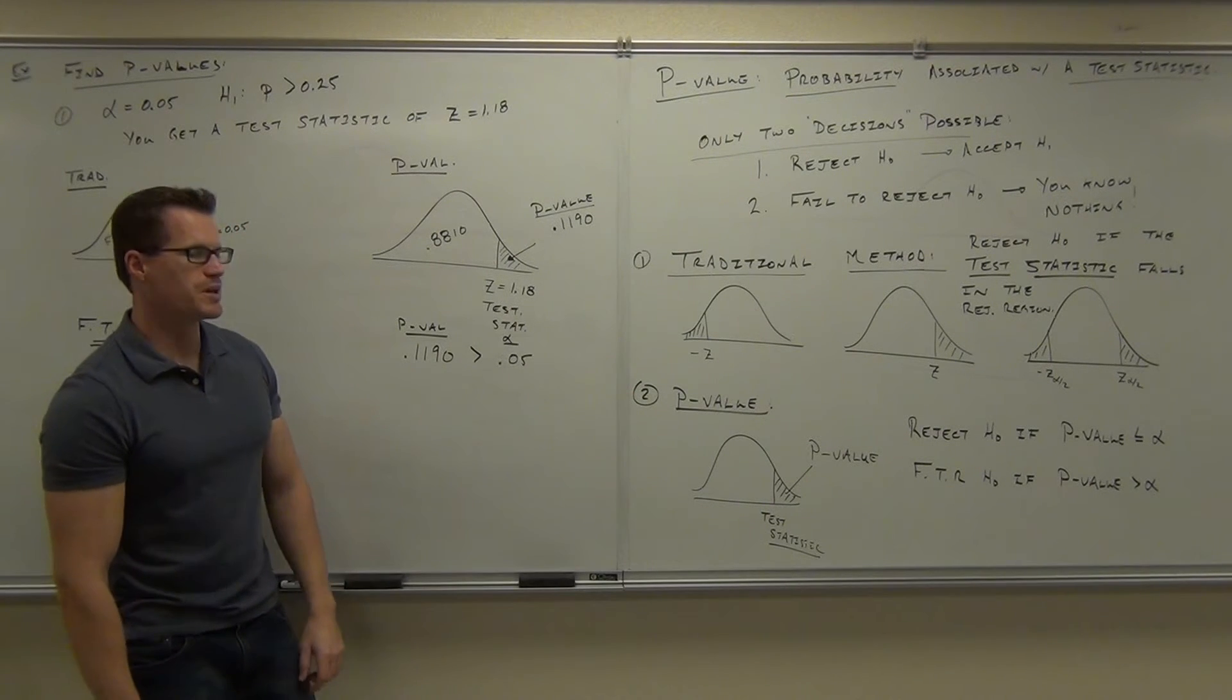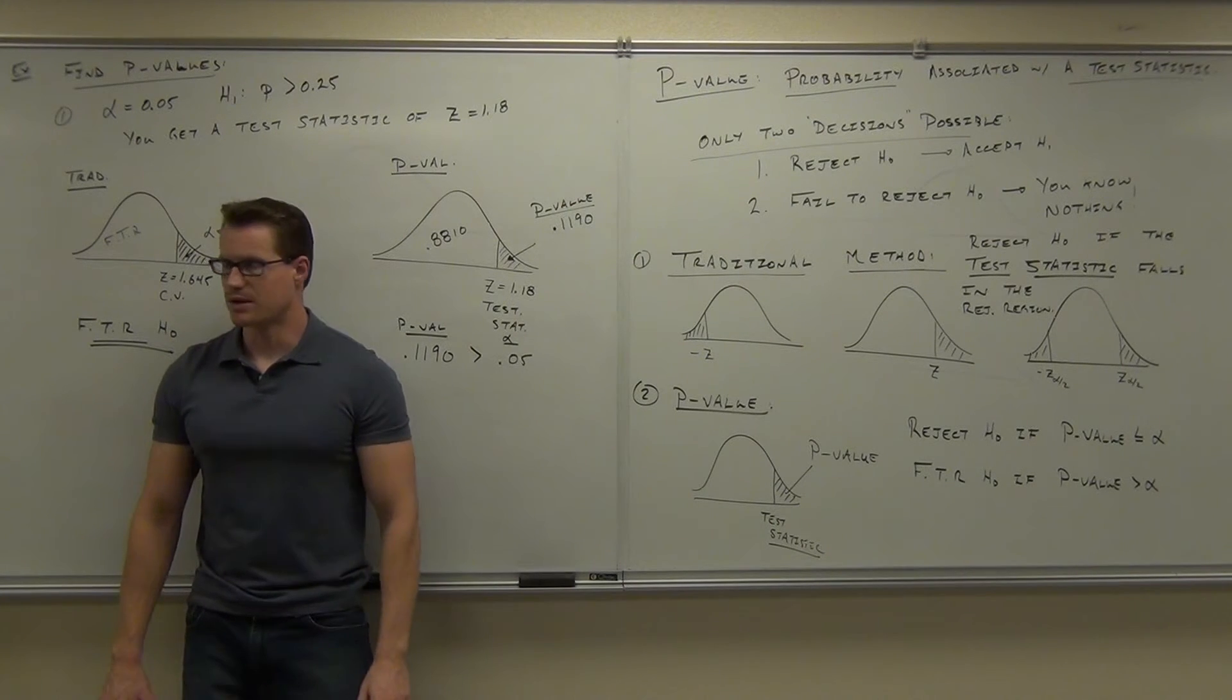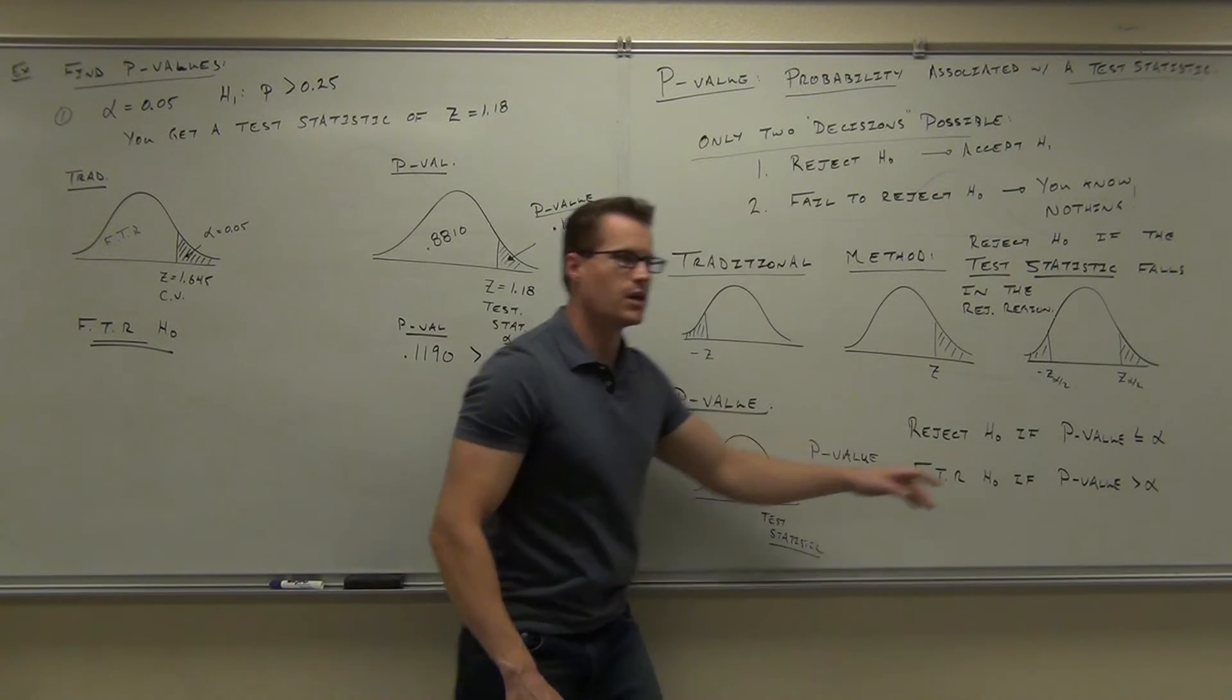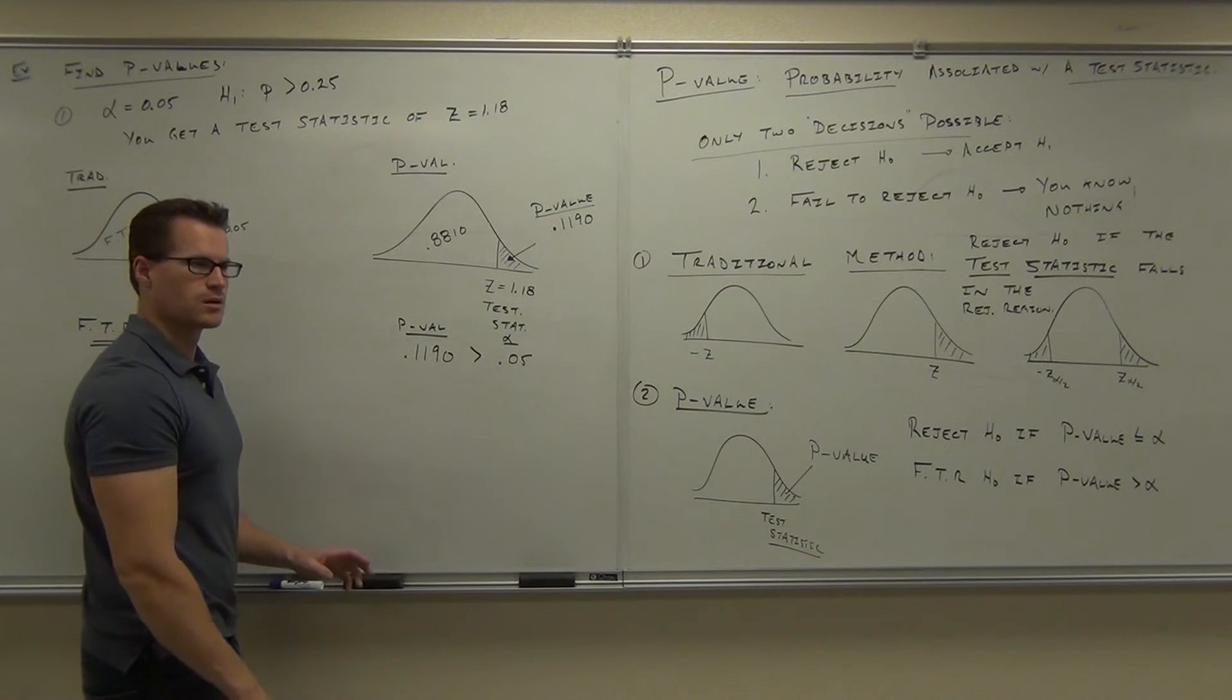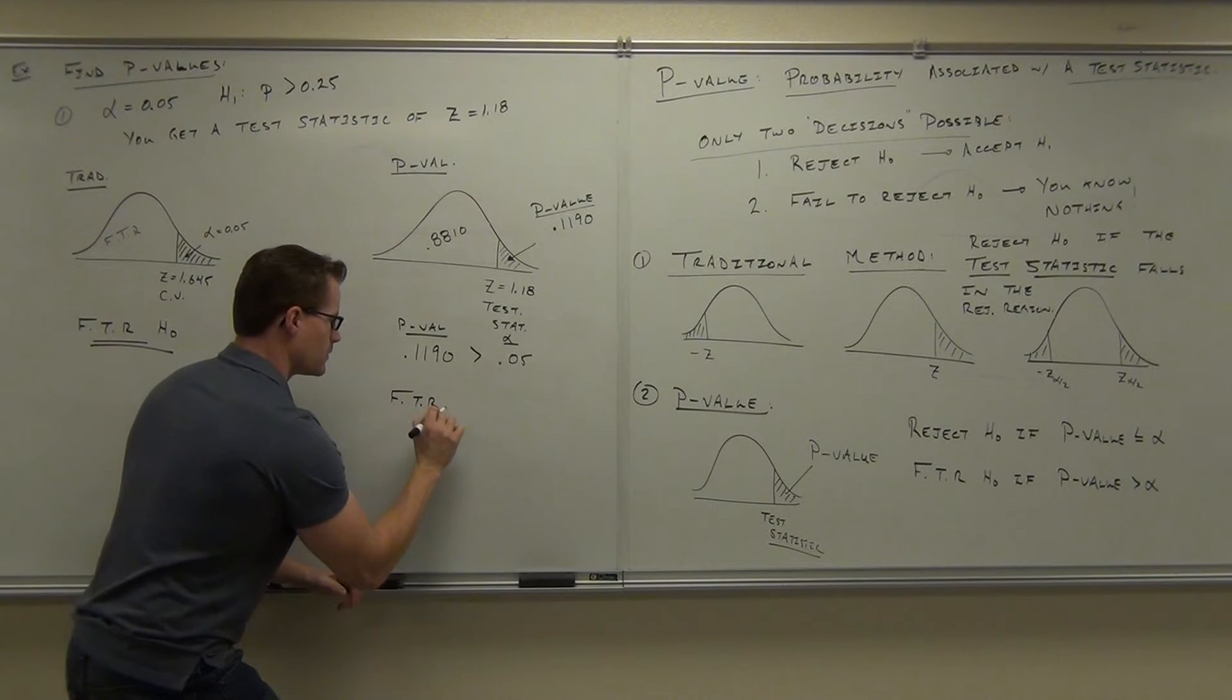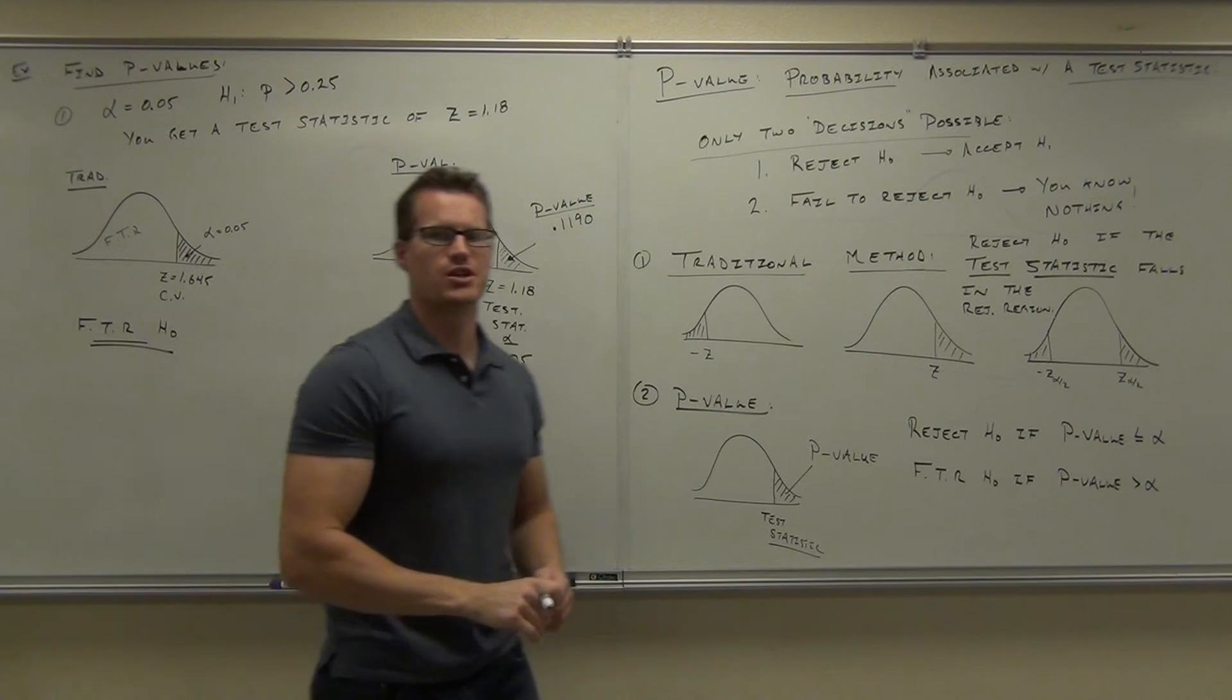If your p-value is bigger than your alpha, you fail to reject H₀. If your p-value is less than alpha, it says it's rare enough to reject it. So what do we do here? Do we reject or do we fail to reject? We're in this case, right? P-value is bigger than alpha. We fail to reject H₀. Same exact situation as before, just a different way of looking at it.